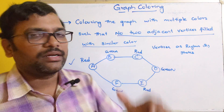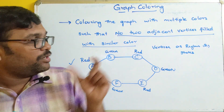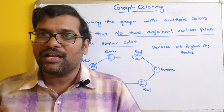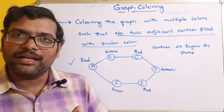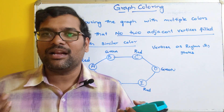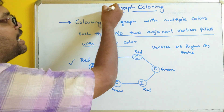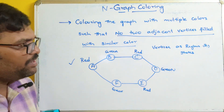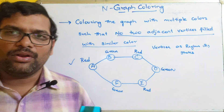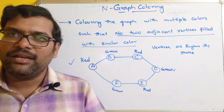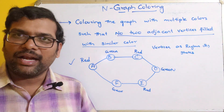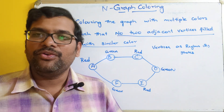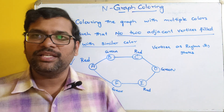That is called graph coloring. If two colors are required to color the graph, it is called a two-color graph. If three colors are required, it is a three-color graph. If four colors are required, it is a four-color graph, and similarly an n-color graph means n number of colors are required to fill the graph. I hope you understood this — it is a very simple concept. If you have any doubts, feel free to post in the comment section. If you enjoyed this session, like, share with your friends, and don't forget to subscribe to our channel. Thanks for watching.